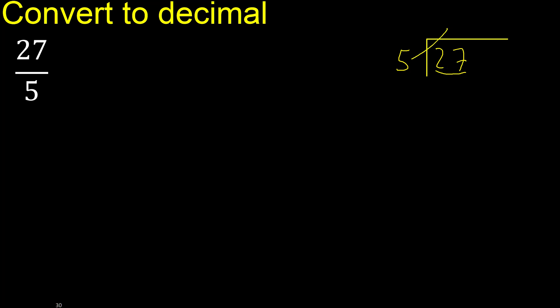5 multiplied by which number is nearest to 27 but not greater? 5 multiplied by 6 is 30, which is greater. 5 multiplied by 5 is 25, which is not greater.